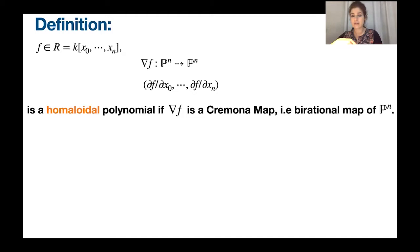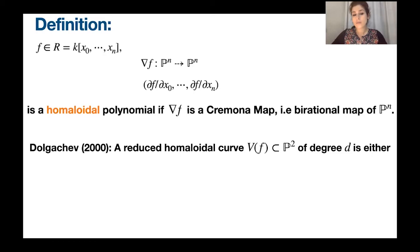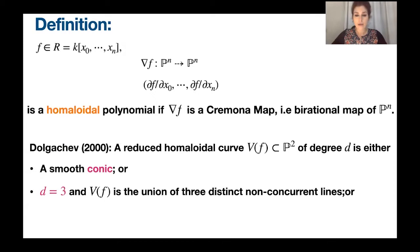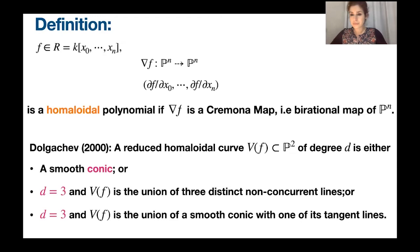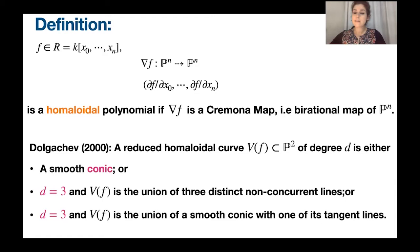Sometimes we refer to the corresponding hypersurfaces and say the hypersurface defined by f is a homoloidal hypersurface. This is why we are interested in studying the partial derivatives. Based on the work of Dolgachev in 2000, he classified all homoloidal curves which are reduced in the plane case, classifying them into three classes considering the degree. For higher dimensions — for example P^3, P^4, etc. — the classification for homoloidal polynomials is poorly known. There are some fundamental works in the case where f is the product of linear forms, but in general there is no classification.